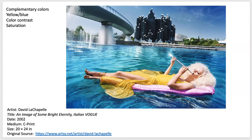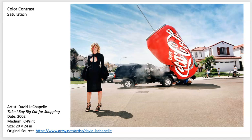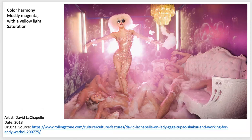This is the work of David LaChapelle — most of his work features really high color contrast with lots of saturation. Here you have complementary colors happening: the blue of the water with the yellow of the dress, the blue of the sky. There's a lot of blue and then the pop of yellow, and magenta and yellow would be considered analogous. Another image by David LaChapelle from 2002 — a red Coke can with a blue sky, which accentuates the red. The image would still have impact with a different can, but the Coke can adds a connection to the color red. Lots of color contrast and saturation.